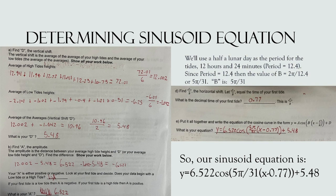The second step is to find the amplitude, which is the distance between the average high tide and the average low tide. To do this, we take the average high tide and find the difference between it and the average of the averages. That gives us an amplitude of 6.522.